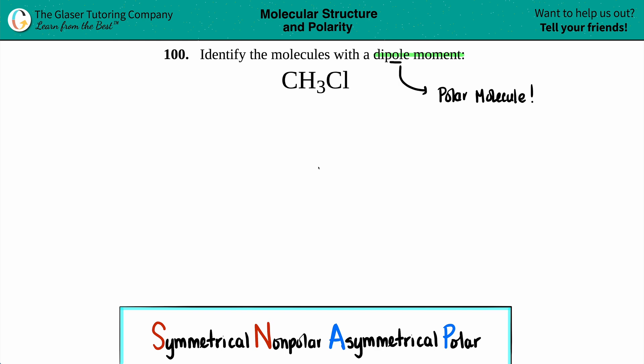You can pause the video if you want and try to draw out the Lewis structure for CH3Cl and then see if it matches mine. In this case, remember hydrogen's never in the middle and the least electronegative element is in the middle. Chlorine is more electronegative than carbon, so carbon in the middle surrounded by the three hydrogens.